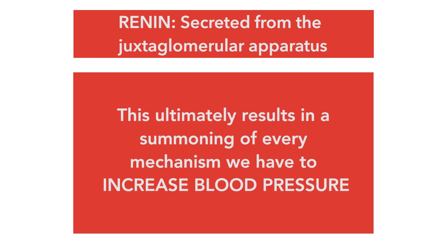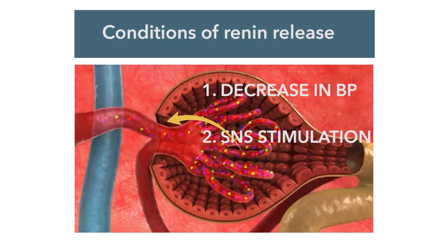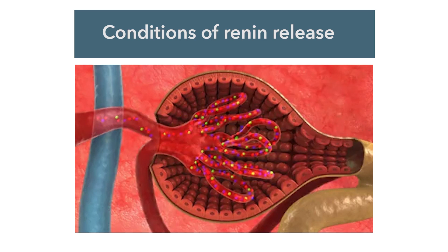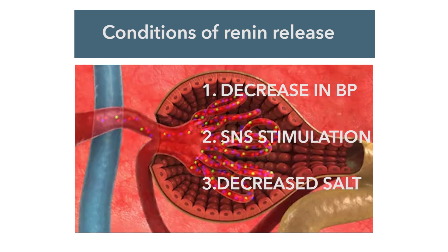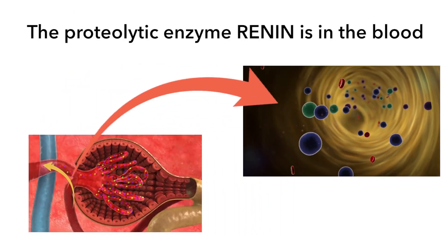In other words, the kidneys are going to secrete renin, and that is going to result in a cascade of events that ultimately leads to the orchestration of every mechanism we have to increase blood pressure and to fight against dehydration. The renin is secreted when the kidneys sense a decrease in blood pressure, a second reason is stimulation from the sympathetic nervous system, and a final reason is when proximal tubular cells detect too little salt. In any of those instances, we now have renin in the blood.